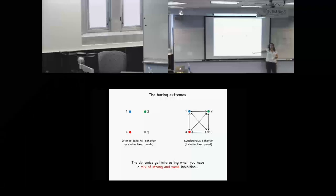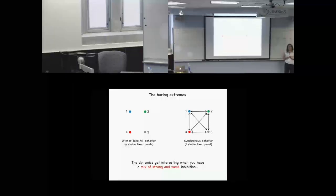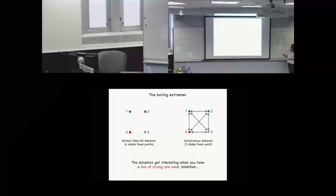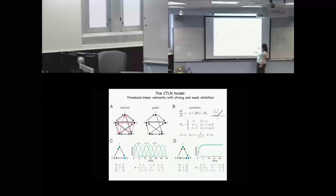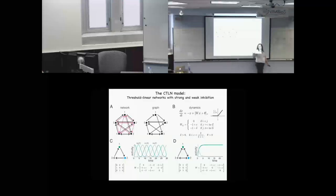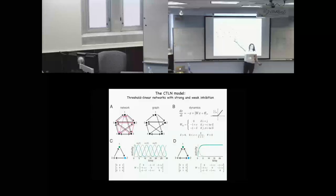The interesting stuff happens when you get a mix of strong and weak inhibition. The quiescent state is unstable because there was a positive external drive to all neurons. Here we have an example network with a mix — showing in pink the strongly inhibitory connections, and otherwise just showing the weakly inhibitory connections in a graph where we have a cycle on three neurons.